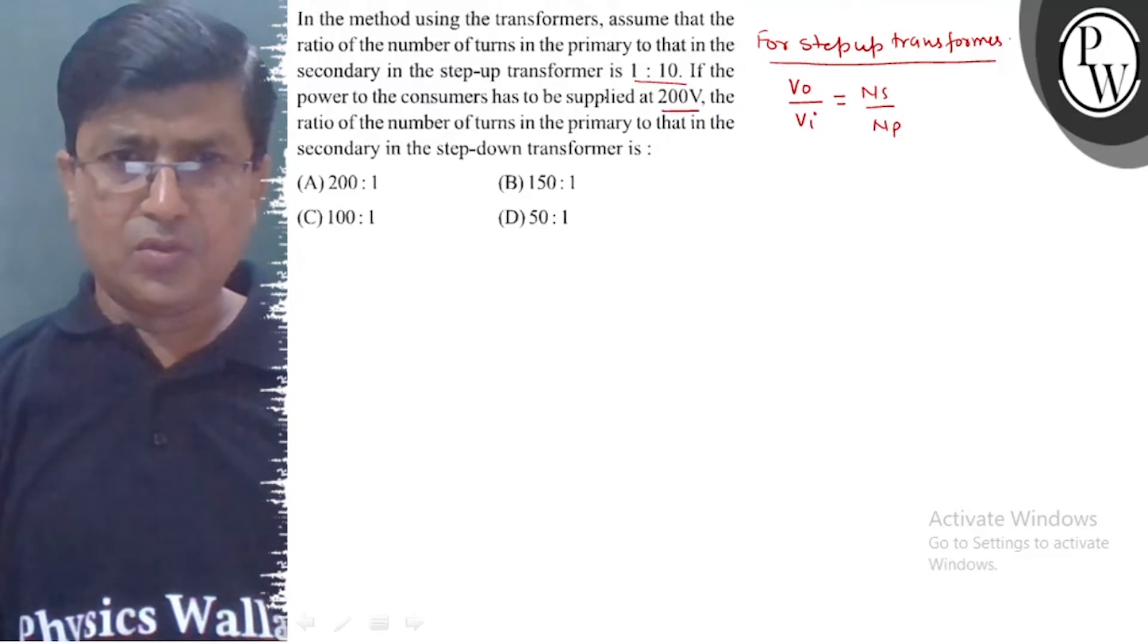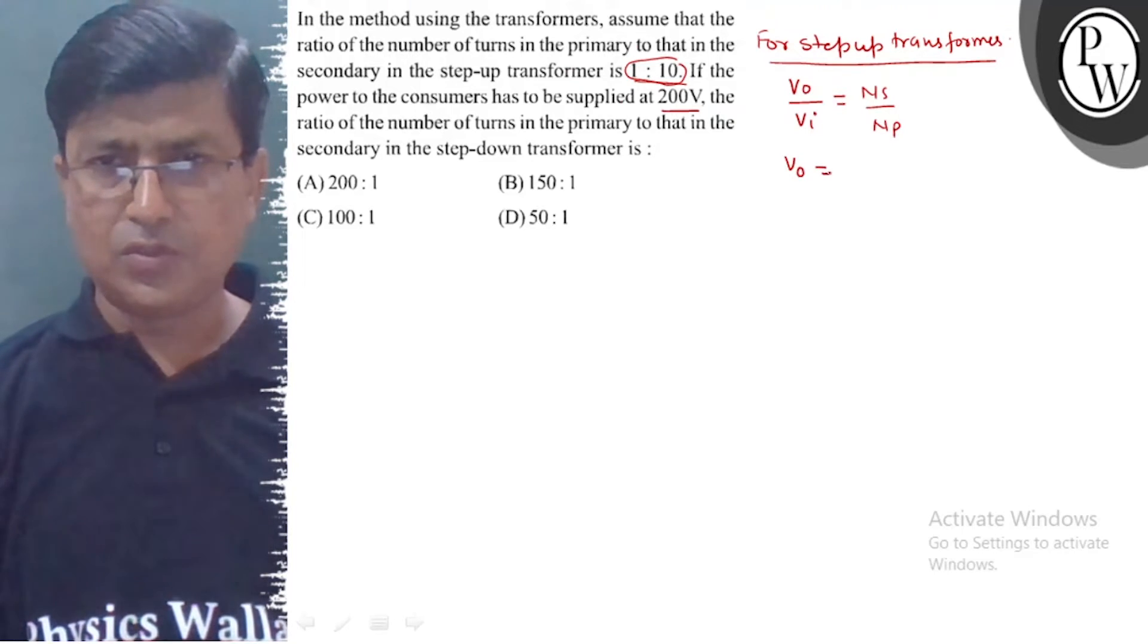So here np upon ns is 1 to 10, so ns upon np value is 10. So v output is equal to 10 into 4000, equal to 40 thousand volt.